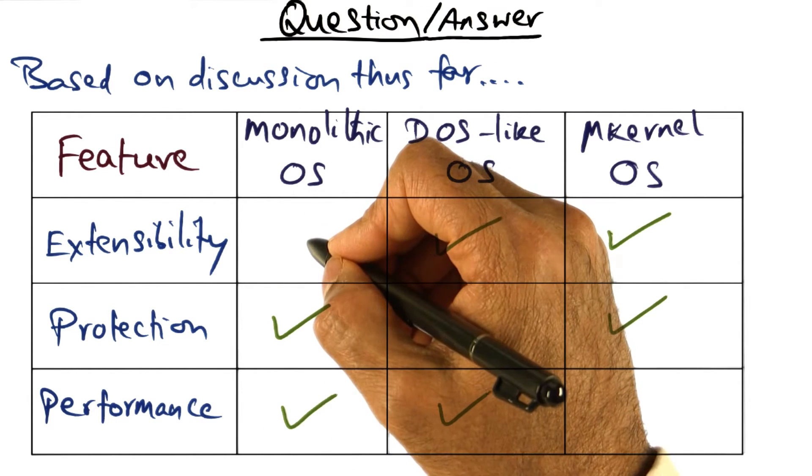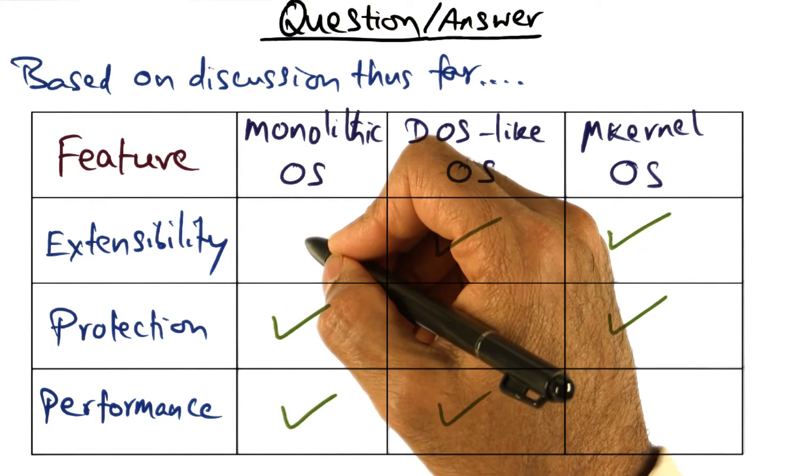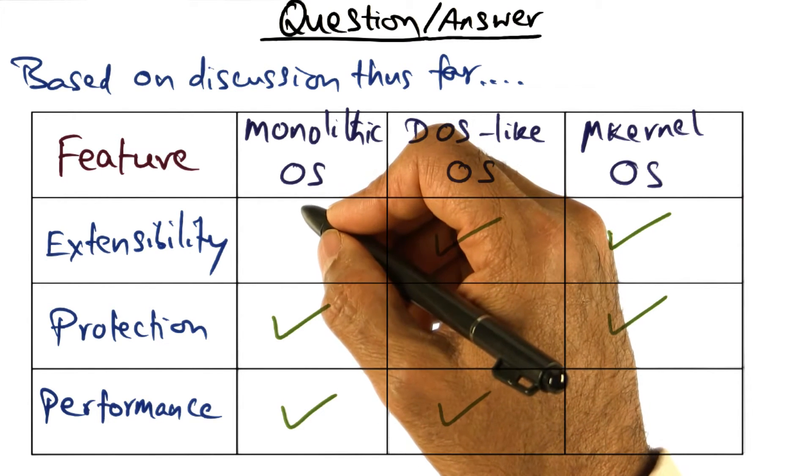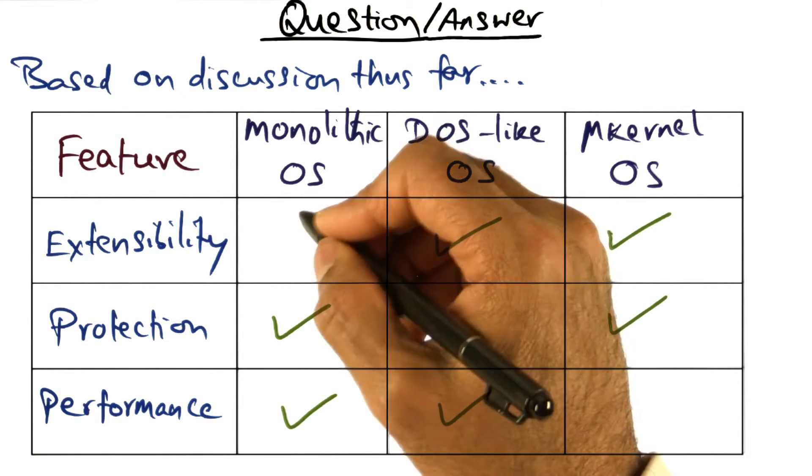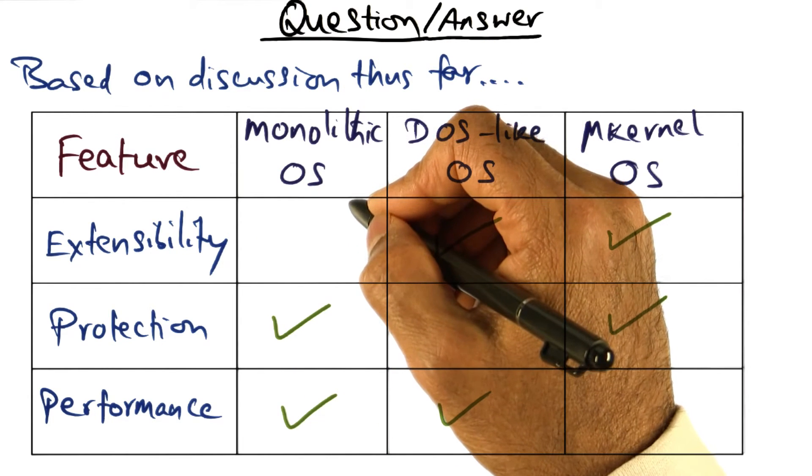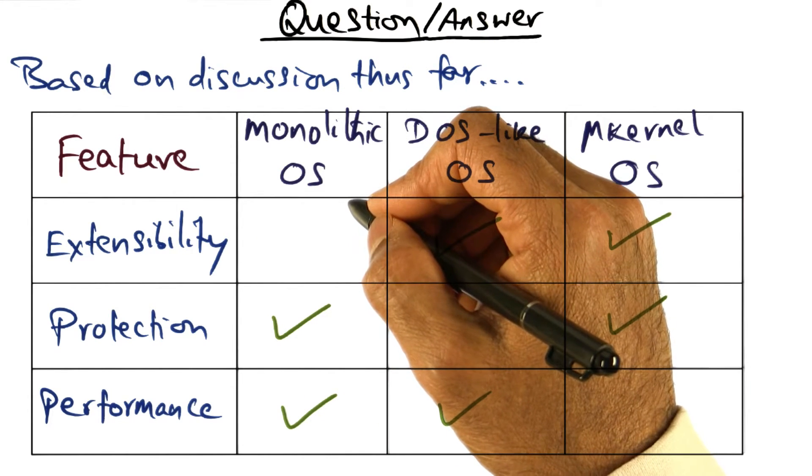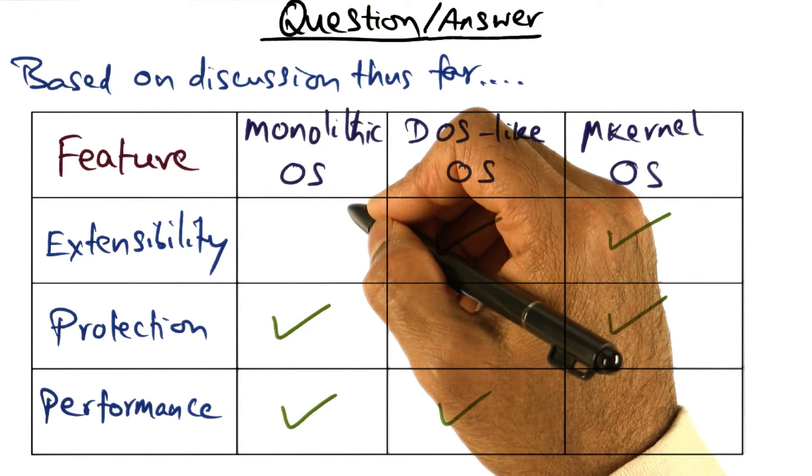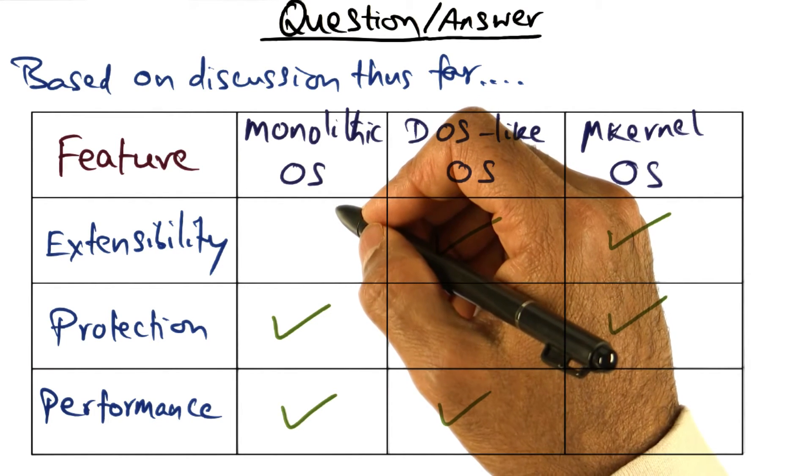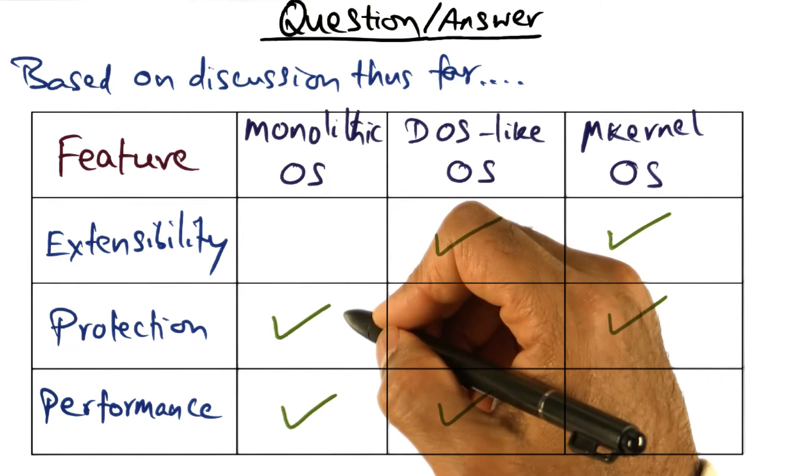On the other hand, it's not easily extensible. Any change to the operating system would require rebuilding the monolithic structure with the changed characteristic of the system service. So one size fits all is what you get with a monolithic structure.